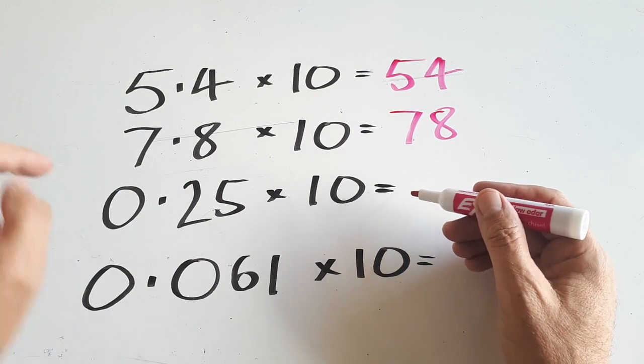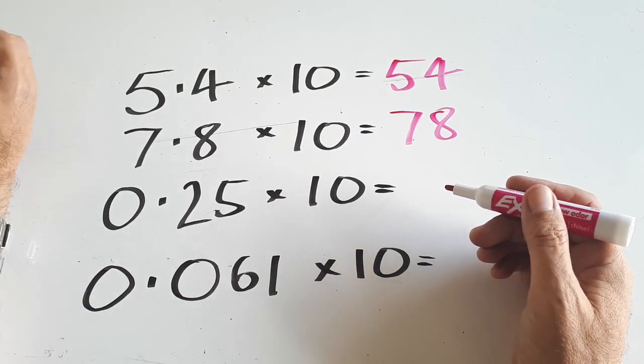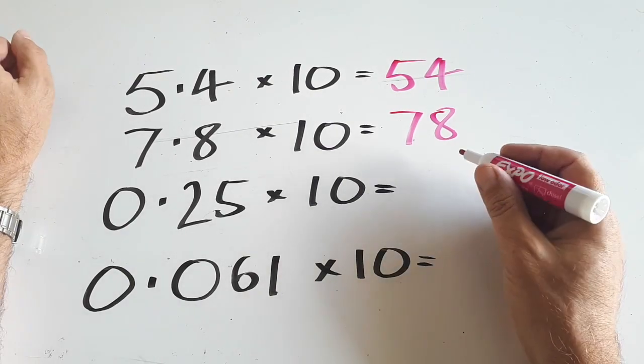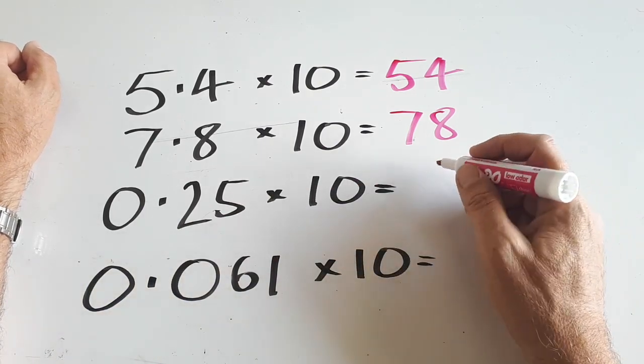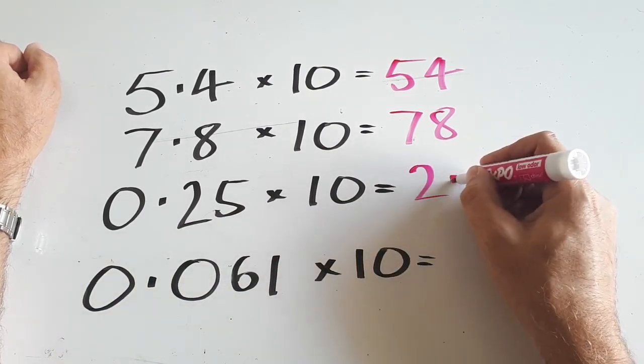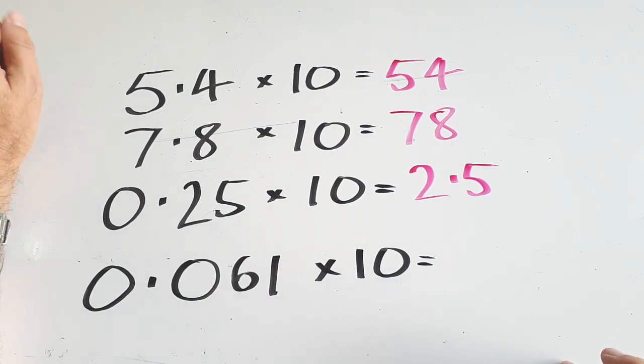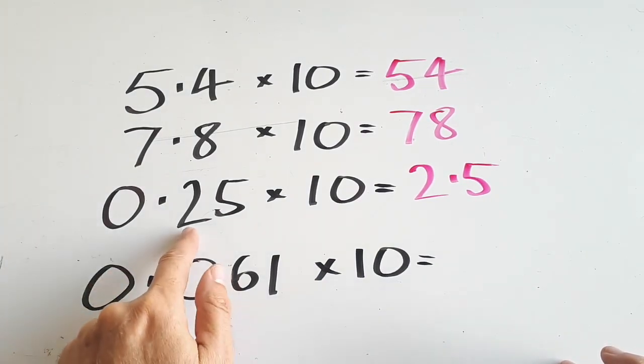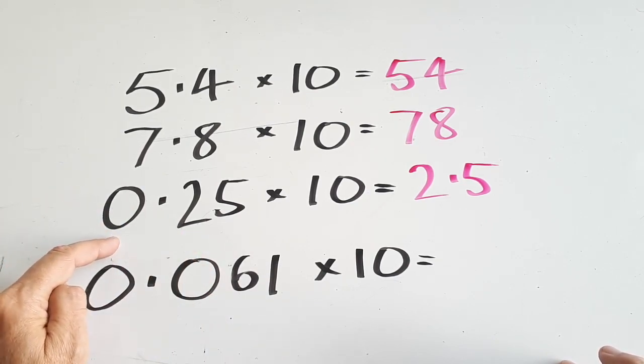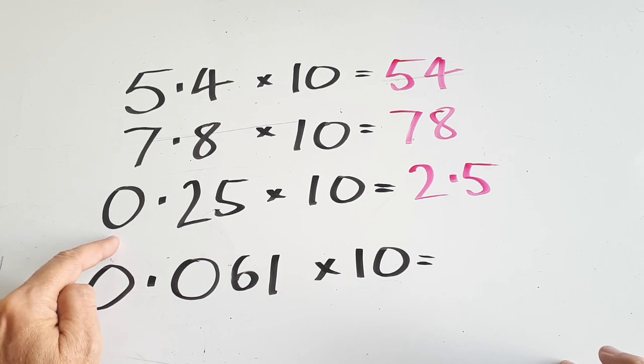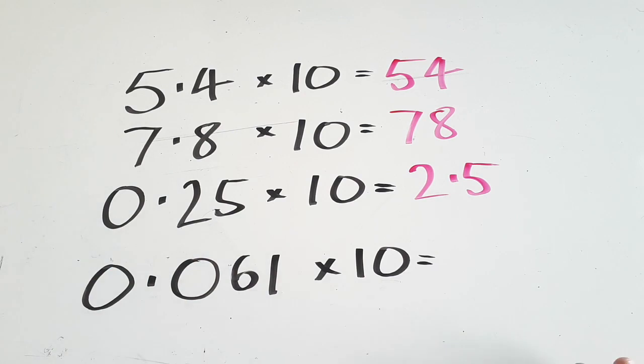This one here, there's nothing there in the 0. But, we can still shift them over one place value. So instead of 0.25, the answer would be 2.5. Hopefully you got that one. I've taken these 2 tenths, multiplied them by 10, put them into the one value. So 2 tenths becomes 2 ones, 5 hundredths become 5 tenths, 2.5.